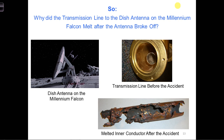Apparently, the transmission line on the Millennium Falcon was not rated to handle this level of current and voltage. The large amount of current caused an increase in ohmic losses, and caused the conductors to heat up to the point that they melted.